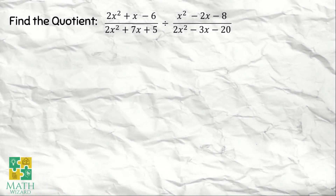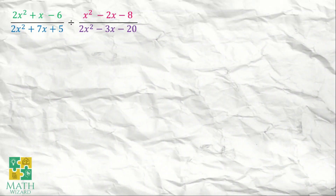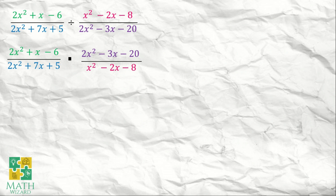We have another example. Find the quotient of 2x squared plus x minus 6 over 2x squared plus 7x plus 5, and x squared minus 2x minus 8 over 2x squared minus 3x minus 20. So the first step: we need to copy, change this one to multiplication, and then we flip the second fraction. Flipping x squared minus 2x minus 8 over 2x squared minus 3x minus 20, it becomes 2x squared minus 3x minus 20 over x squared minus 2x minus 8.